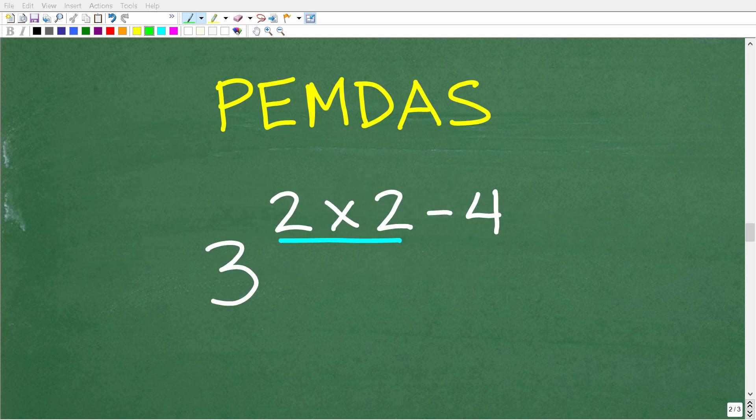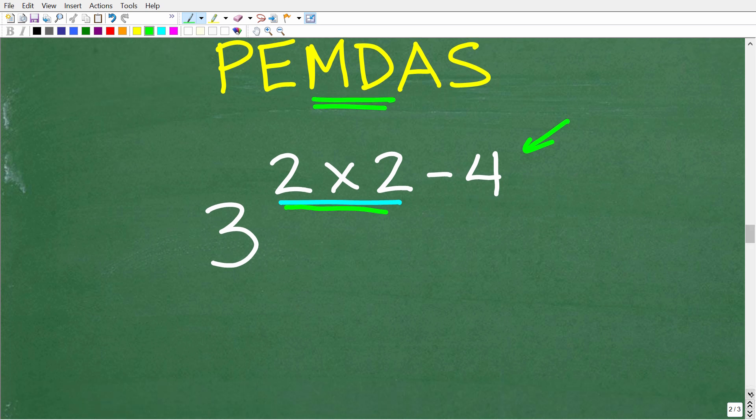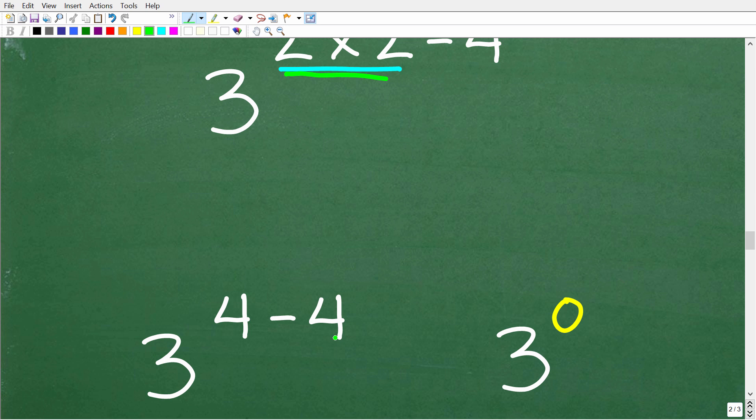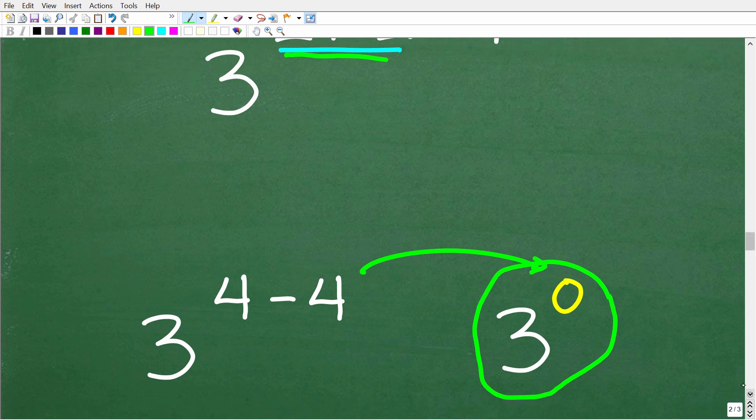Just a few more steps to get the right answer. We need to finish with all multiplication and division. We have to figure out what 2 times 2 is, get that answer, and then subtract 4. 2 times 2 is of course 4, so we end up with 3 to the 4 minus 4 power. 4 minus 4 is of course 0, so now we have 3 to the 0 power.